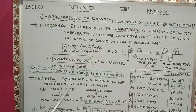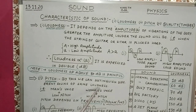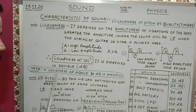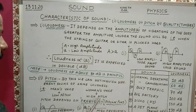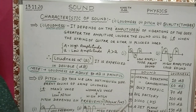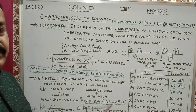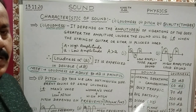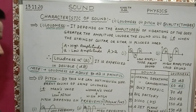The second characteristic of sound is pitch. By pitch, we can distinguish different sounds of the same loudness. For example, a man's voice has low pitch and a woman's voice has high pitch, yet both can have the same loudness. Low pitch sound is pleasant while high pitch sound is irritating. Pitch depends on the frequency of the vibrations. High frequency produces high pitch sound; low frequency produces low pitch sound.